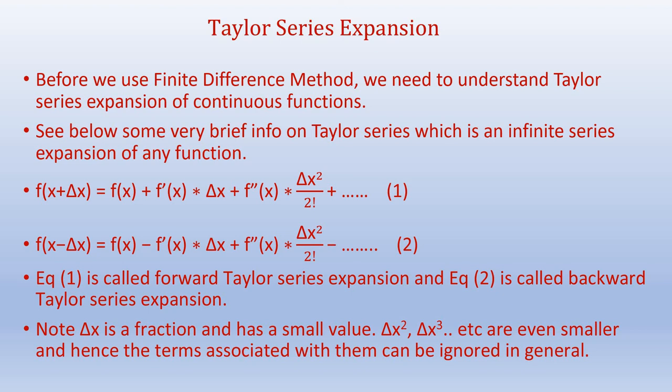Likewise, f of x minus delta x equals f of x minus f dash of x times delta x minus f double dash of x times delta x squared by 2 factorial and so on. Equation 1 is called the forward Taylor series expansion that we used to develop Euler's explicit method. And equation 2 is called the backward Taylor series expansion and we need this equation to generate our Euler's implicit method equation.